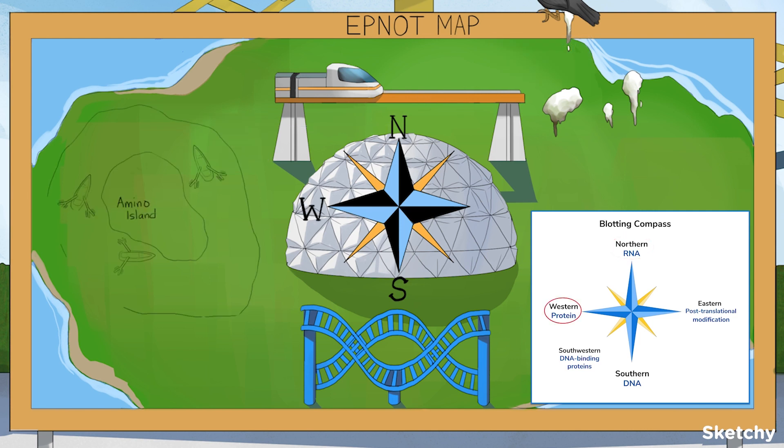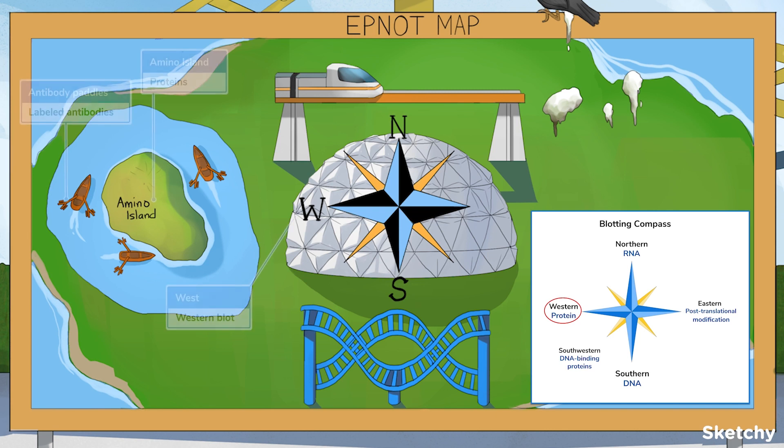Then there's the Western blot, that uses labeled antibodies to identify specific proteins. Now, if you're looking for more adventure, migrate west to Amino Island. Man, those amino animals are so cute. Nothing like a cuddly little vulture.